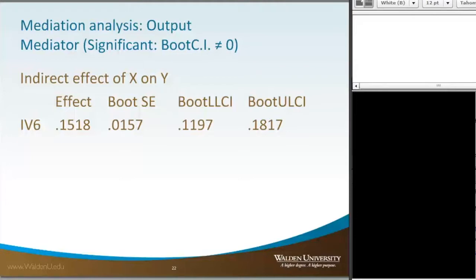Now, in this output, it was 0.1197 as the lower and then 0.1817 as the upper. Since the confidence interval of the bootstrapping output does not include the value of 0, then we would say that there is a statistically significant output for variable number 6. Variable number 6 is a mediator.